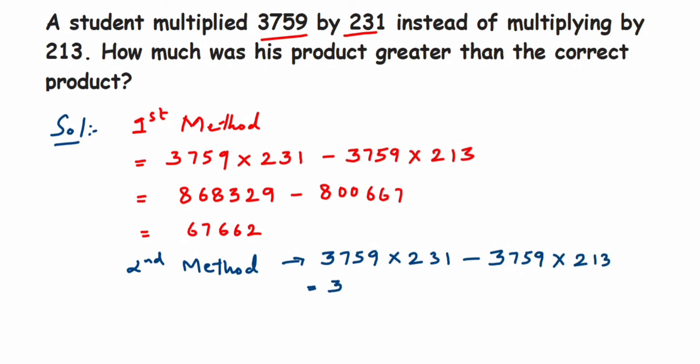So we can take this number common. I'm going to pull out this number 3759. If I take this out common, 231 is left, then minus, I have taken this number out so 213 is left. You can subtract these two numbers. So you will get 3759 multiplied by 18.